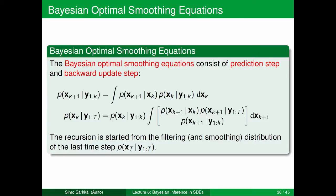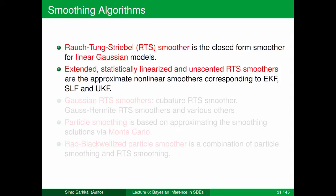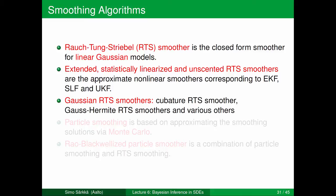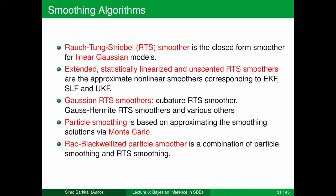The Bayesian optimal smoother algorithm works as follows: we have a prediction step (unless we stored prediction results from the forward filter), then a backward recursion derived on the previous step. We start from the last time step's filtering distribution and do a backward pass using the smoothing equations. That's the whole smoother. In terms of specific algorithms, the Rauch-Tung-Striebel smoother is the Kalman filter smoother solving linear Gaussian models exactly. Then we have Extended, Unscented, statistically linearized, and other smoothers using similar approximations as the corresponding filters. Gaussian smoothers use numerical integration such as Gauss-Hermite quadrature integration. Particle smoothers use Monte Carlo integration, and mixture Gaussian approximations include Rao-Blackwellized particle smoothers.